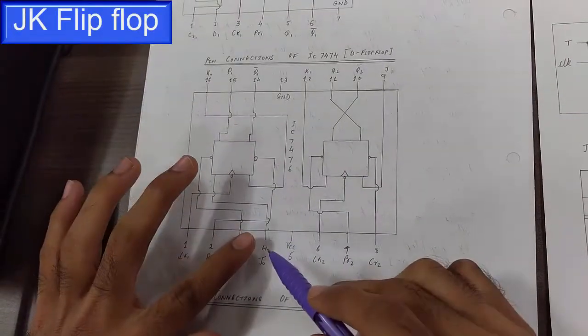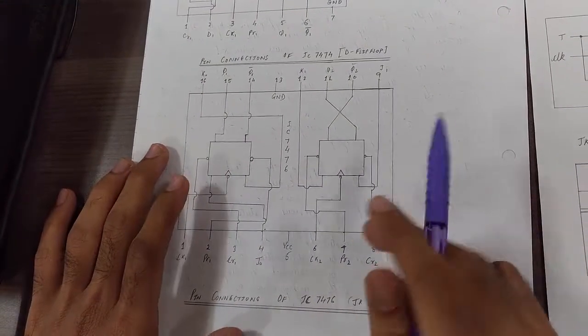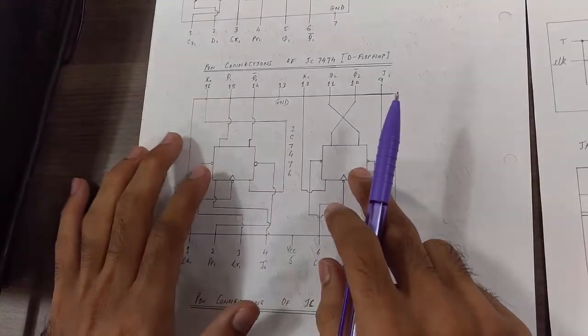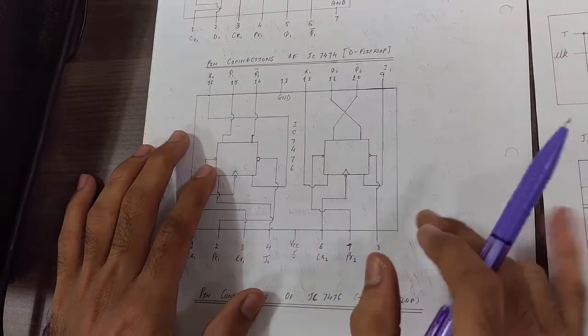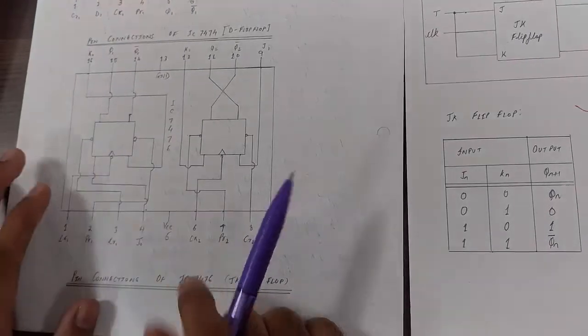This is the pin out for IC 7476 which is the JK flip flop IC. It has 2 flip flops. To verify JK flip flop truth table which is given over here, we will use only 1 flip flop that is J0 and K0.